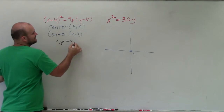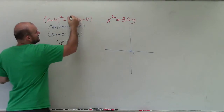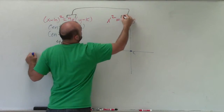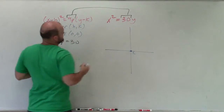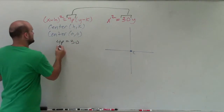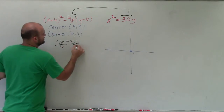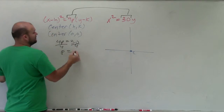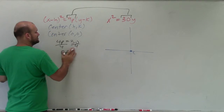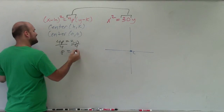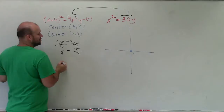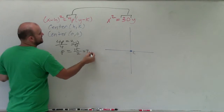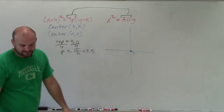So 4p is equal to 30 — you can see this matches our equation. So I write 4p equals 30, divide both sides by 4, which gives us 15 over 2, which you could also say is 7.5.